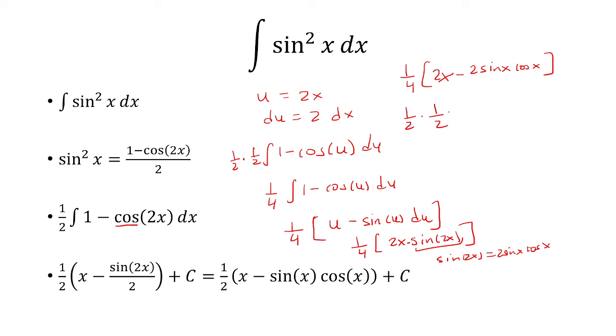And if I distribute the 1 half, so if I rewrite this as 1 half times 1 half, let's get the 1 half to distribute. I have 1 half times x minus sine x cosine x.